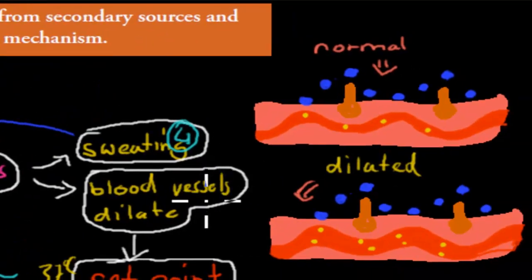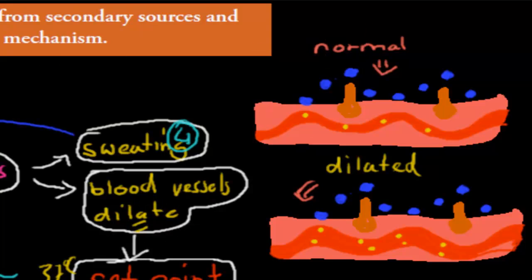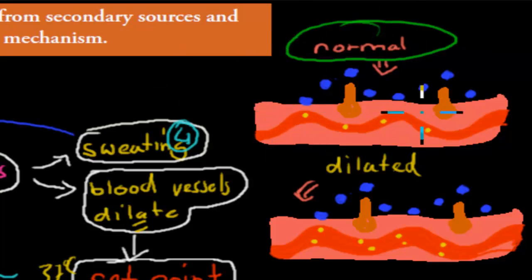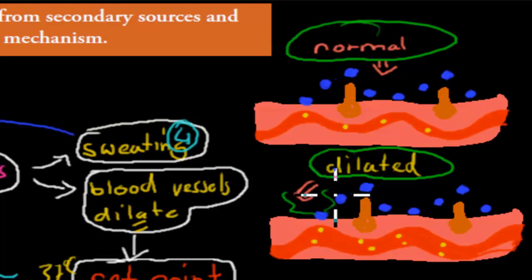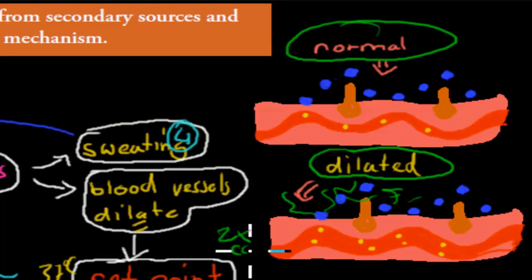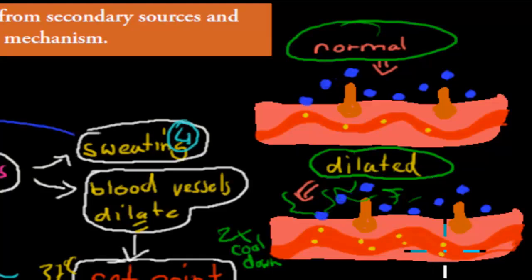Now, blood vessels dilating — dilating means increasing in size. Normally the blood vessels are a certain size at the skin, but when they dilate they're twice as big. This means twice as much body heat can flow through them. When the sweat evaporates and cools everything, there is twice as much heat being cooled down because the blood vessels are bigger and more body heat can fit into them.